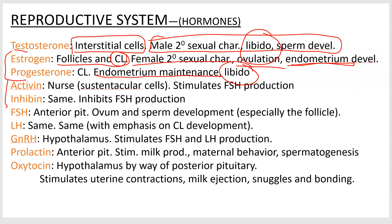Activin and inhibin — activin is not listed but I want you to know it. They're made in the sustenticular cells, and inhibin is also made in the ovaries. Activin stimulates follicle-stimulating hormone production, and inhibin inhibits it.